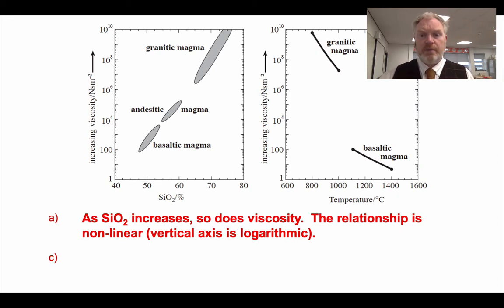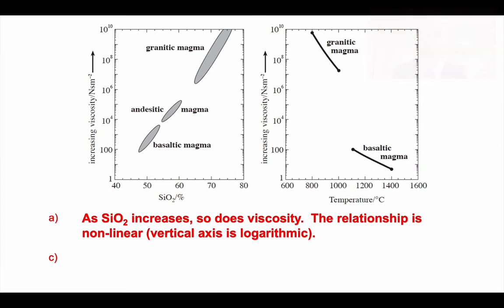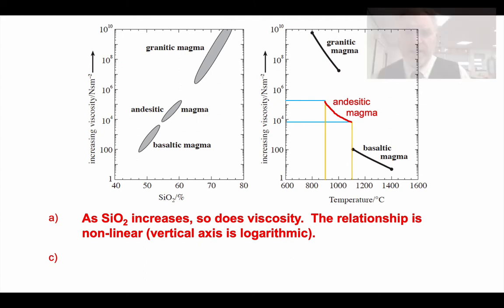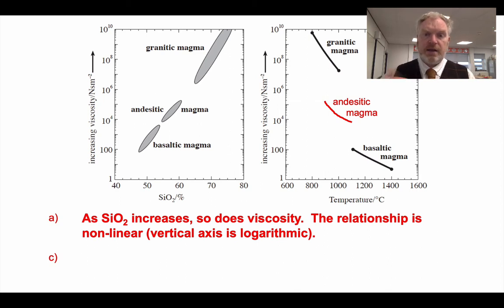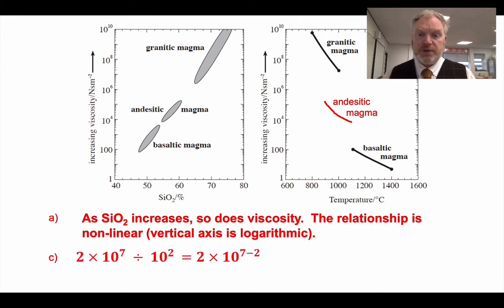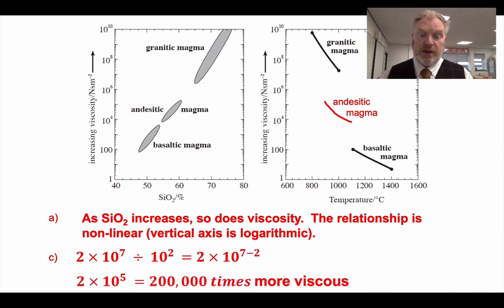For the sketch of andesite viscosity on the right-hand graph, you should have something roughly in the middle of the two other curves — you can plot it accurately using the data from the second graph. Finally, for the calculation: the difference is between the top of the basaltic magma line at 2×10⁻⁷ and the bottom of the granitic magma line at 10². Dividing those gives 2×10⁵, or in other words, two hundred thousand times more viscous — a very big difference.